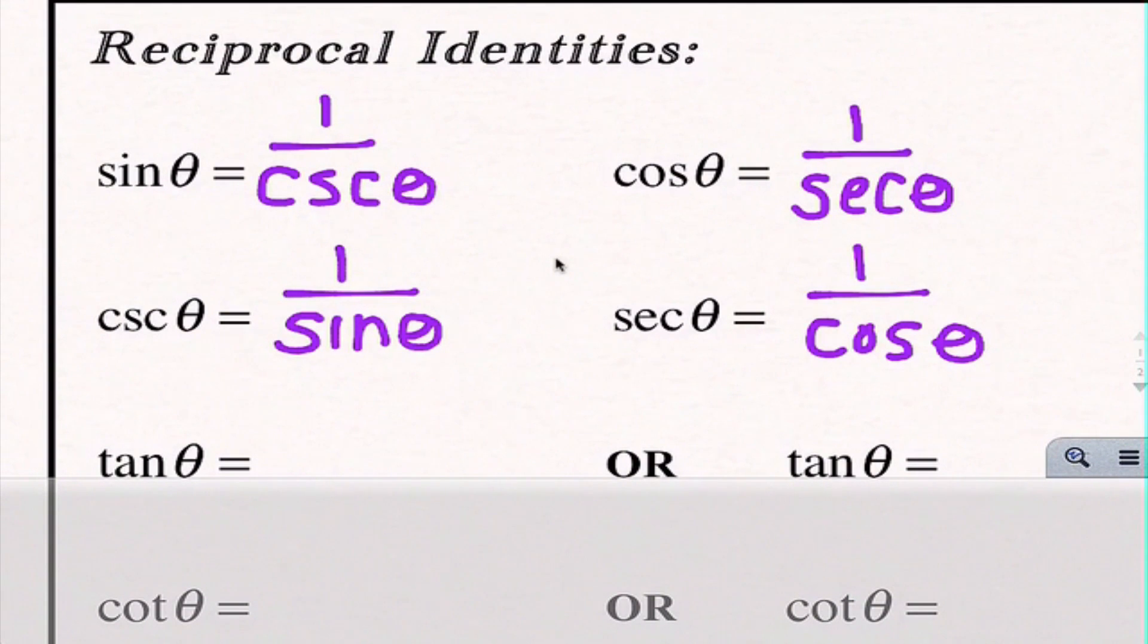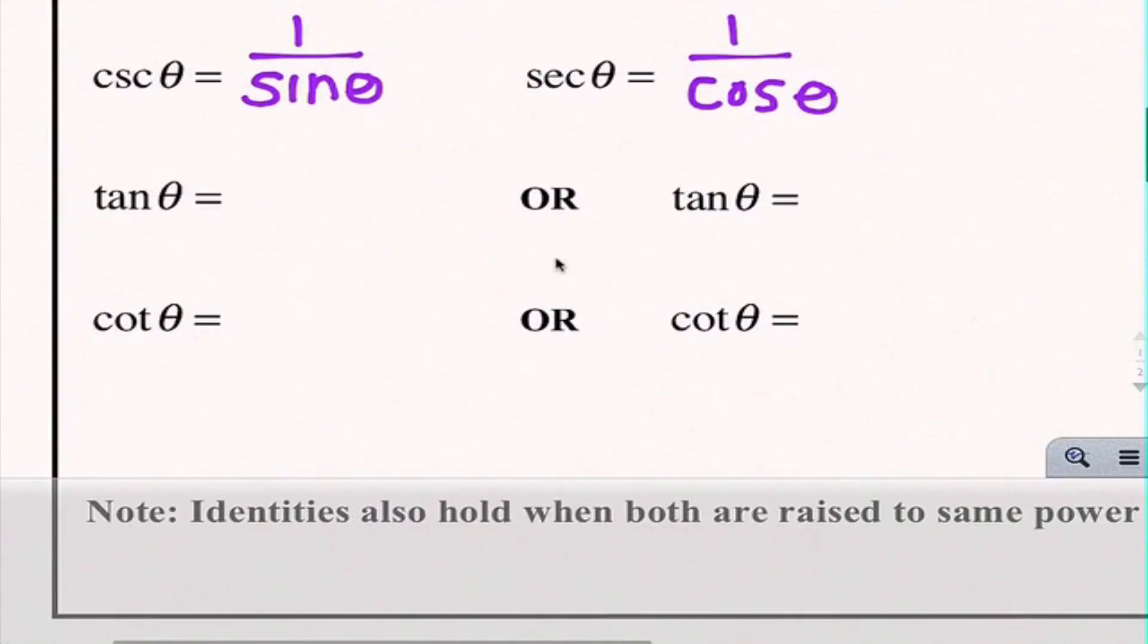This is something you guys already knew, we're just writing it in a slightly different way. The other two that you already know is that we learned that tangent and cotangent are reciprocals of one another. So I'm going to write tangent is 1 over cotangent theta, and cotangent theta is 1 over tan theta.